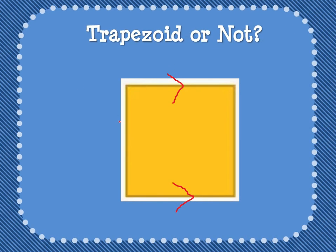You'll also notice that the left side and the right side are also parallel. So it has at least one pair of parallel sides. It can have more than one pair of parallel sides using our definition.